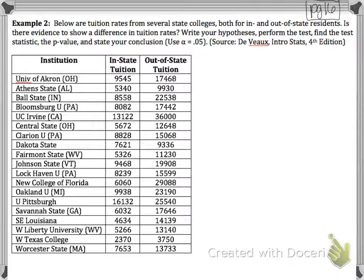Below are tuition rates from several state colleges, both for in- and out-of-state residents. Is there evidence to show a difference in tuition rates? Write your hypotheses, perform the test, and find the test statistic, the p-value, and state your conclusion.